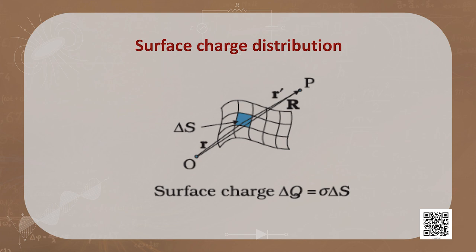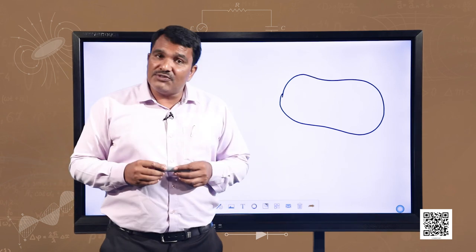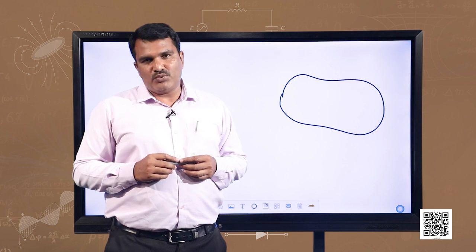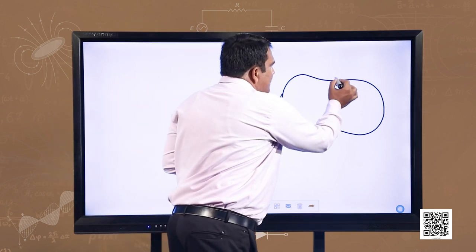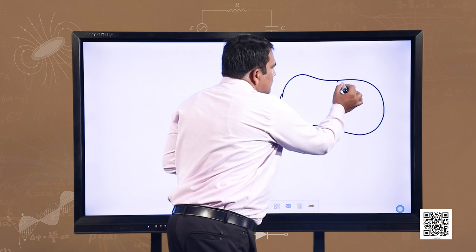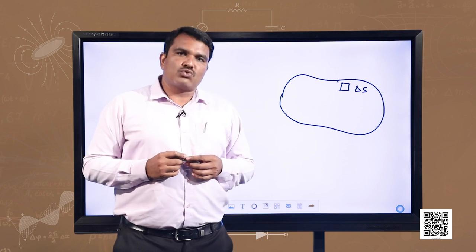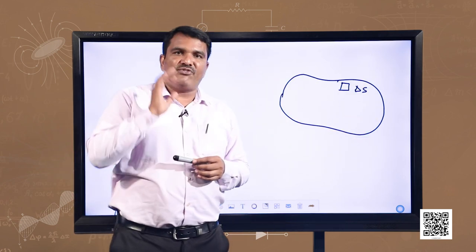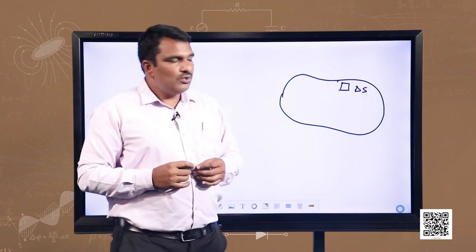Let us take the example of the surface of a charged conductor. It is impractical to specify the charge distribution on this conductor in terms of the locations of the microscopic charged constituents. It is more feasible to consider an area element delta S — a small area element cut from the surface, which is very small on a macroscopic scale but big enough to include a large number of electrons and specify the charge delta q on it.